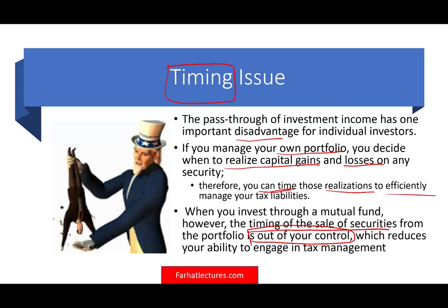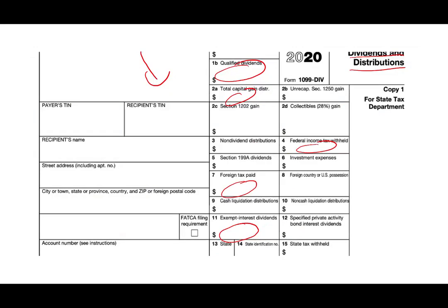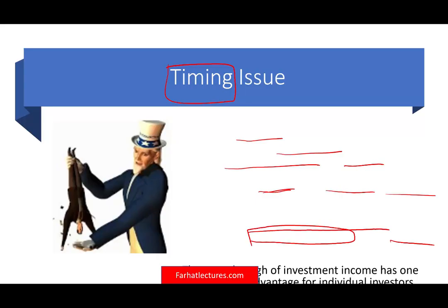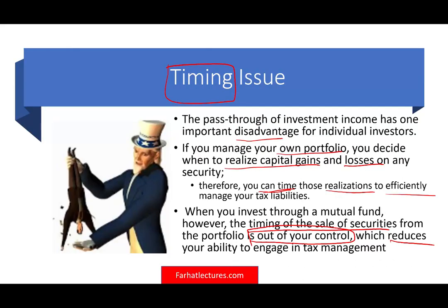The pass-through of investments has one important disadvantage for individual investors. If you manage your own portfolio, you decide when to realize capital gains — and you can also realize losses to offset gains. You can time those realizations to efficiently manage your tax liability, which is extremely important. With a mutual fund, the timing of the sale of securities is out of your control, which reduces your ability to engage in tax management. You can instruct the fund to withhold taxes if you want, which at least ensures you're paying taxes on the profit.